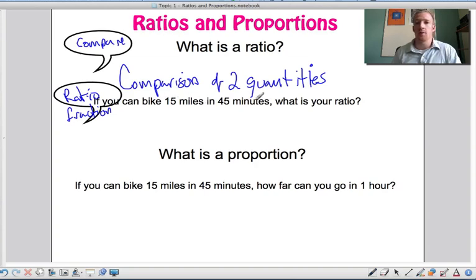If you can ride 15 miles in 45 minutes, what's your ratio? If you're comparing miles of riding to minutes that you're riding, that would be 15 miles per 45 minutes. And whenever you write 'per' generally you have like a fraction line there.